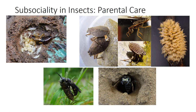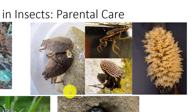Many insects tend these stages until the more mature larvae or nymphs can better fend for themselves. The orders of insects in which tending of eggs and young is most frequent are the Blattodea, Orthoptera and Dermaptera, Thysanoptera, Hemiptera, Coleoptera, and Hymenoptera. Giant water bugs exhibit paternal egg tending, an example of parental care without a nest.